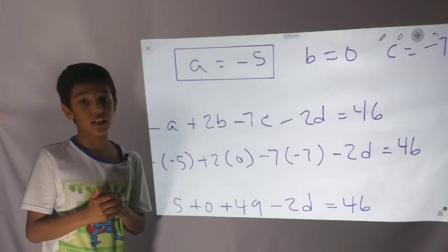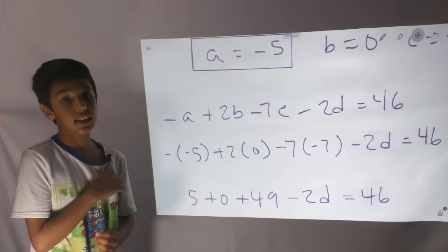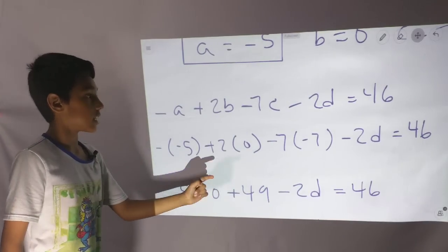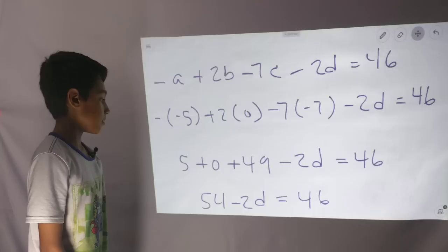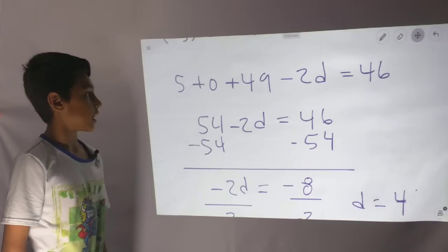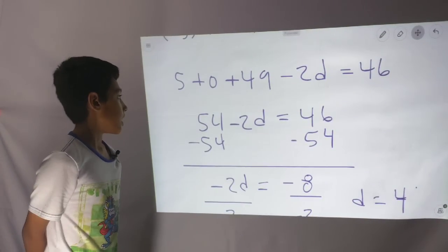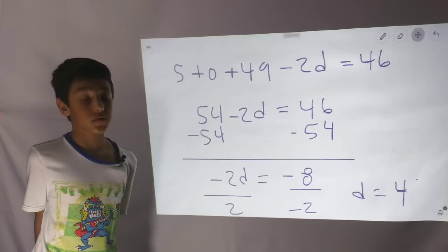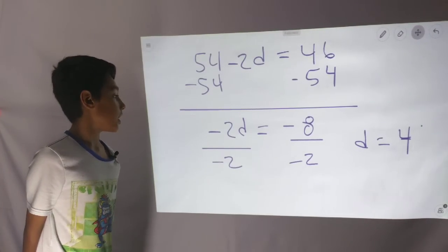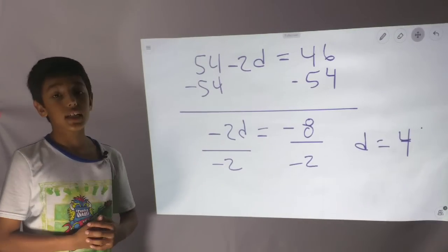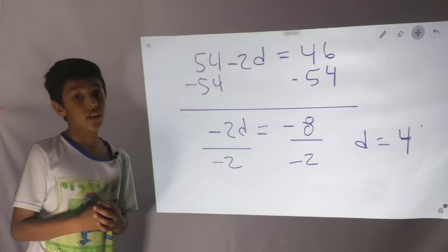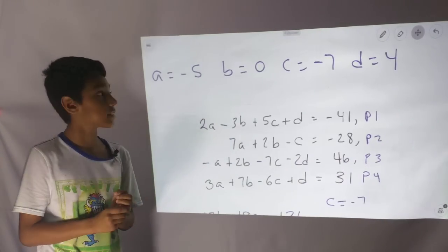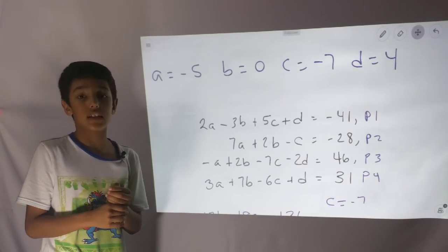Now we plug our values into P3, which has a D. With A as negative 5, B as 0, and C as negative 7, we get 5 plus 0 plus 49 minus 2D equals 46. Since 5 plus 49 is 54, we have 54 minus 2D equals 46. Subtracting 54 from both sides gives negative 2D equals negative 8, and dividing by negative 2 gives D equals 4. So all answers are: A equals negative 5, B equals 0, C equals negative 7, and D equals 4.